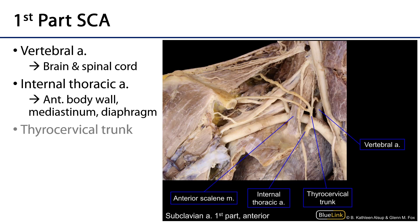Let's take a look at the branches of the subclavian artery. The first part has three branches: the vertebral artery, a large branch heading superiorly; the internal thoracic artery, a large branch heading inferiorly; and the thyrocervical trunk.